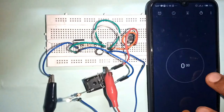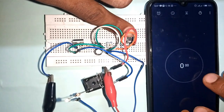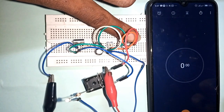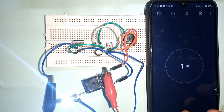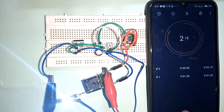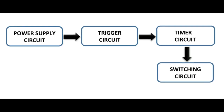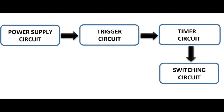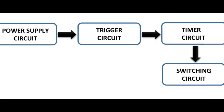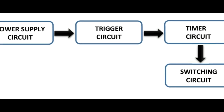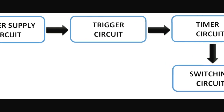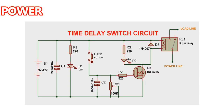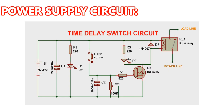In this development, we are using simple passive components to make a delay switching circuit, using the simple block diagram: power supply circuit, trigger circuit, timing circuit, switching circuit, and power supply circuit.